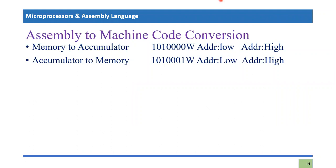Today I'm going to do another tutorial on assembly to machine code conversion. Recently in a discussion with my students, I had a very interesting question. That machine code converter involved some procedure we never discussed on our channel, so in this video I'm going to discuss that specific case — which relates to memory to accumulator or accumulator to memory data movement.